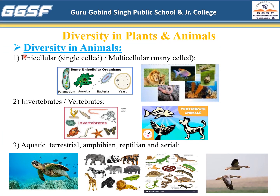Like plants, animals also show diversity. Some are unicellular animals, that is they have only one cell, while some are multicellular animals, that is they have more than one cell. Some animals are invertebrates while some are vertebrates. This world is full of a variety of animals like aquatic animals which live in water, some are terrestrial animals which live on the earth, while some are amphibian animals which live both in water and on the earth. Some are reptilian animals which crawl on the earth, while some are aerial animals like birds which fly in the air.